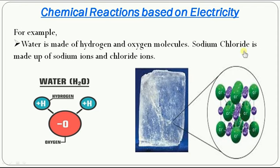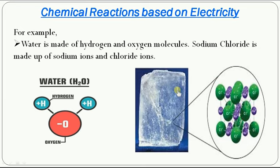Similarly, consider the sodium chloride crystal. A minute part of a sodium chloride crystal looks like this — the sodium ion is combined with chloride ions repeatedly in a three-dimensional structure to form the crystal. So the sodium ion and the chloride ion are the fundamental particles of sodium chloride crystals. Sodium chloride is made up of sodium ion and chloride ion, and these two can be decomposed electrically.